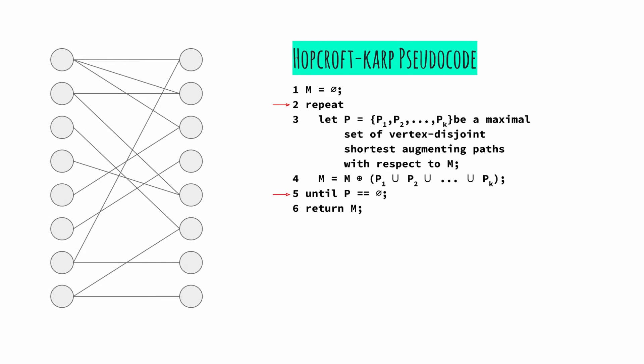As long as there exists an augmenting path P, a better solution M prime, which is the symmetric difference between the previous solution and the set of the augmenting paths, exists. If we can find the set of K vertex disjoint shortest length paths, then the symmetric difference would give us a solution with K more edges than before, since one more edge will be included in the solution for each path in the set.